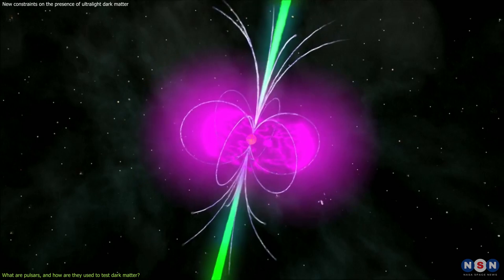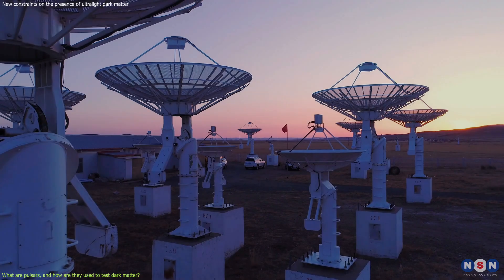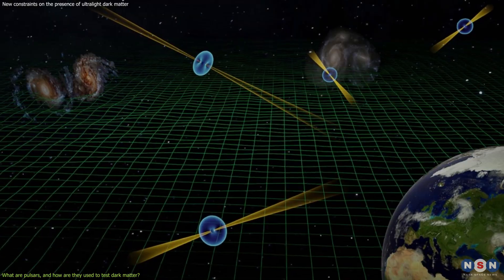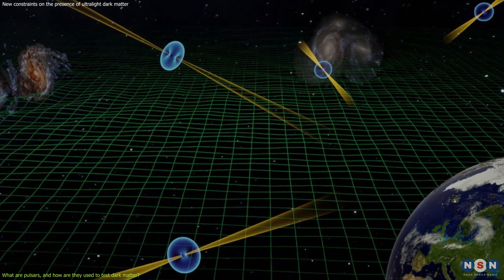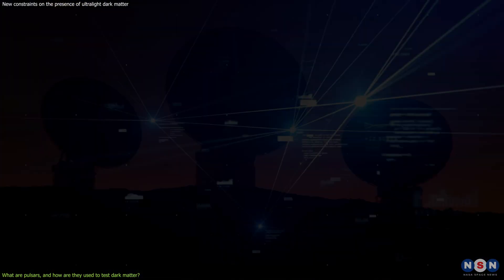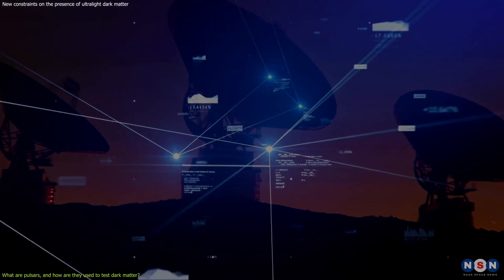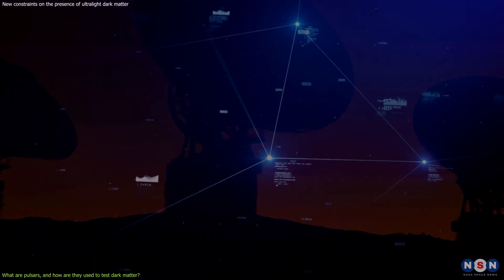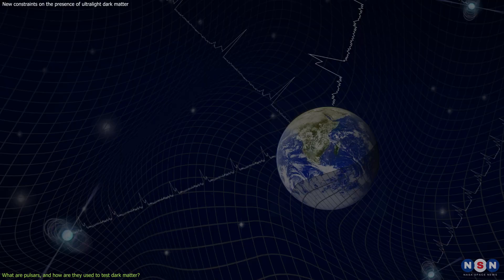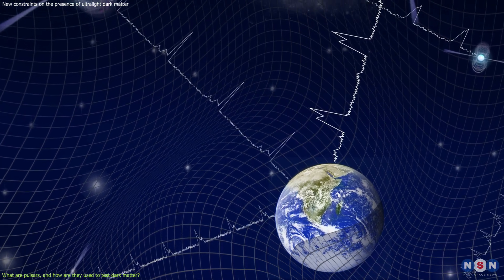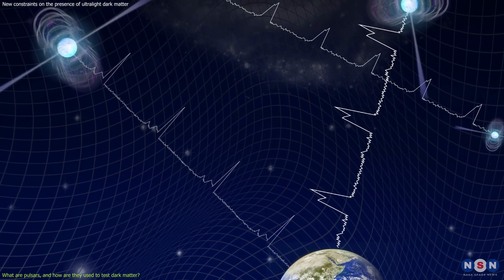But how do we measure the timing of pulsars? To do this, we need a network of radio telescopes that can observe a large number of pulsars over a long period of time. These telescopes collect the data from the pulsar signals and combine them to create a pulsar timing array, which is a powerful tool to study the effects of gravity and dark matter on pulsar signals.